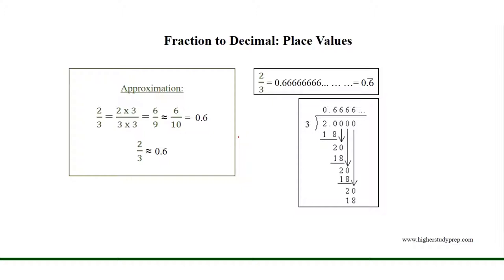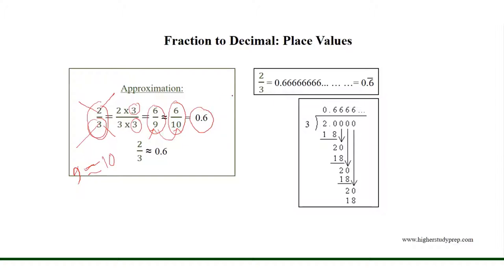We may have some fractions for which we can't convert the denominator to a power of 10. In that case, we may multiply both the numerator and denominator by a specific number so that the denominator is approximately equal to a power of 10. For example, if we consider 2 over 3, we can multiply by 3 to get 6 over 9, and since 9 is approximately equal to 10, we write 6 over 9 is approximately equal to 6 over 10, which is 0.6. The original value of 2 over 3 is 0.6 bar, where 6 is the repeating part. Applying this approximation, we can anticipate the decimal value of a fraction.